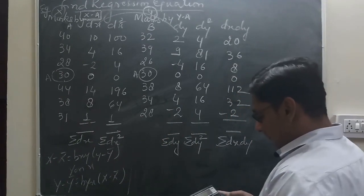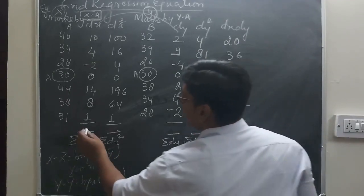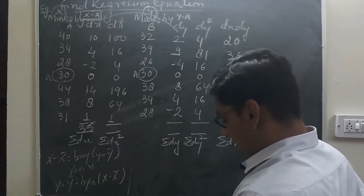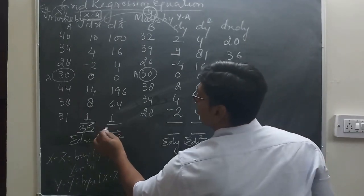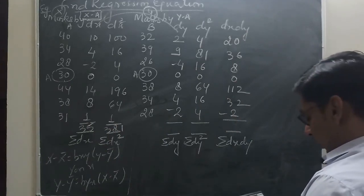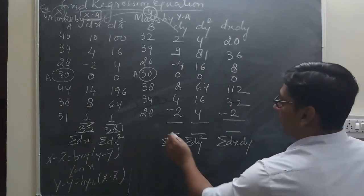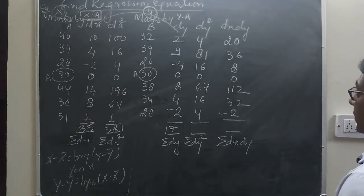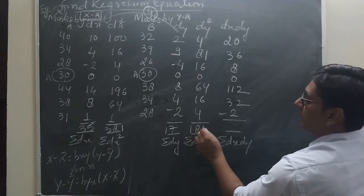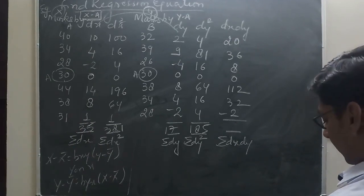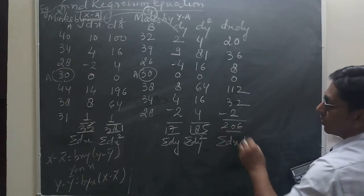Calculating all totals: Σdx = 10+4+14+8+1−2 = 35. Σdx² = 100+16+4+196+64+1 = 381. Σdy = 2+9+8+4−2−4 = 17. Σdy² = 4+81+16+64+16+4 = 185. Σdx·dy = 20+36+8+112+32−2 = 206.